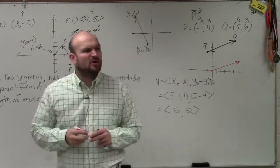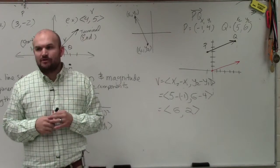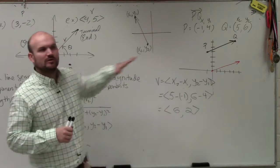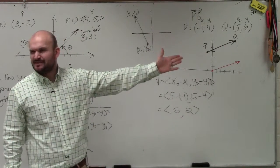First of all, by writing this in component form, does that graph look like it has the same magnitude as my black graph? Does it look like it's kind of in the same directed angle, right? If they were to extend into infinity, they would be parallel to each other. They have about the same slope, right?